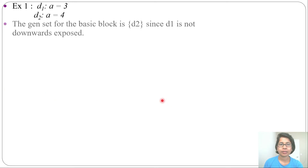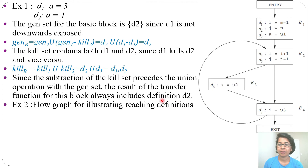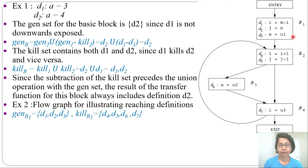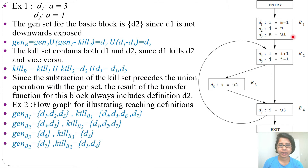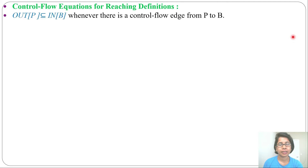I also discussed two examples for gen and kill with a flow graph, showing for every block what will be gen and what will be kill. So in reaching definition, till now I discussed: what is reaching definition, what is gen, what is kill, what is the transfer equation for reaching definition, and two examples. Let's now discuss the control flow equation for reaching definition.